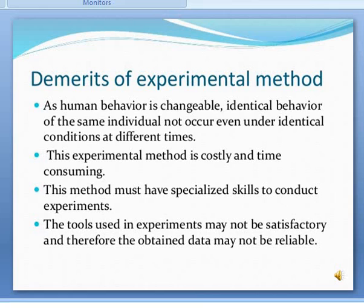The demerits of experimental methods are: as human behavior is changeable, identical behavior of the same individual does not occur even under identical conditions at different times. This experimental method is costly and time-consuming. This method requires specialized skill to conduct an experiment. The tools used in experiments may not be satisfactory and therefore the obtained data may not be reliable.